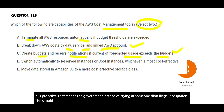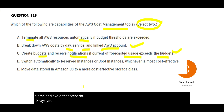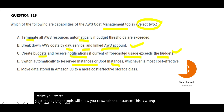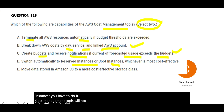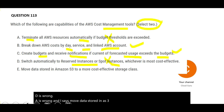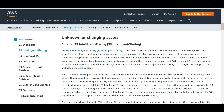Option D says cost management tools will allow you to switch instances — that is wrong. Switching instances is something you must do yourself; cost management tools won't do it for you. Option E says they will move data in S3 to a more cost-effective storage class — that is also wrong. That function is achieved by S3 Intelligent Tiering, not cost management tools. So the answers are B and C.